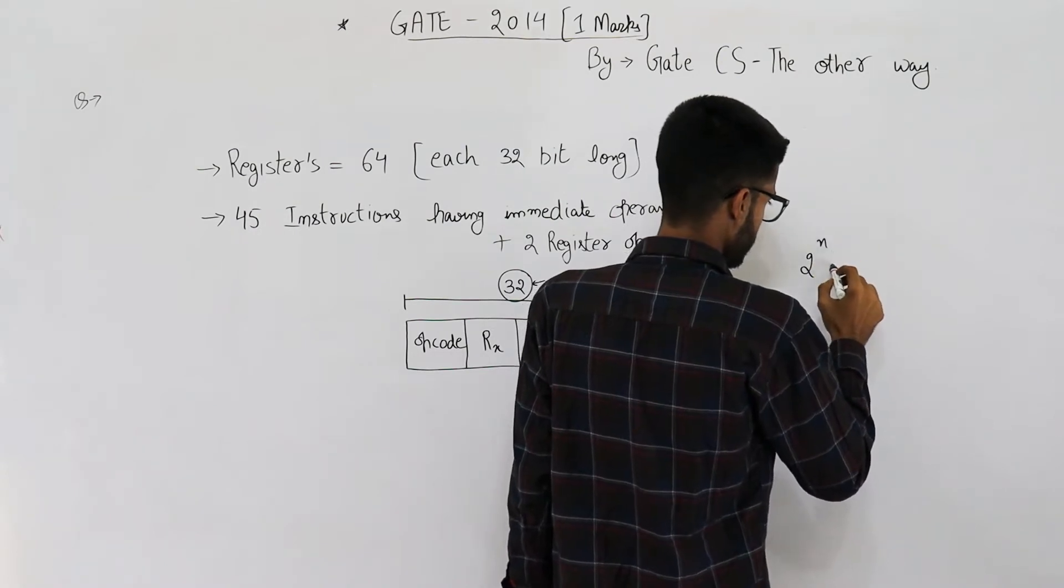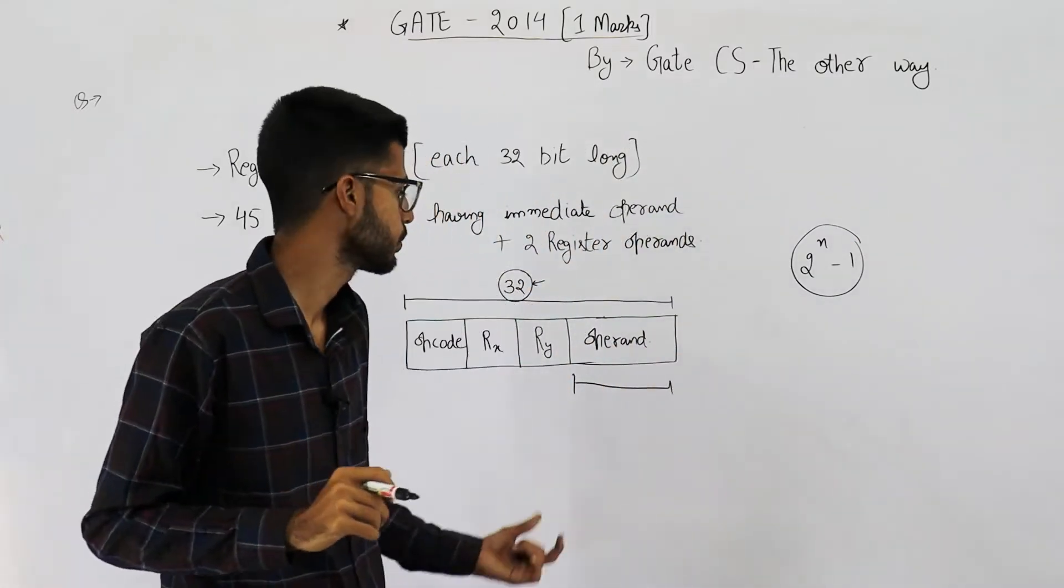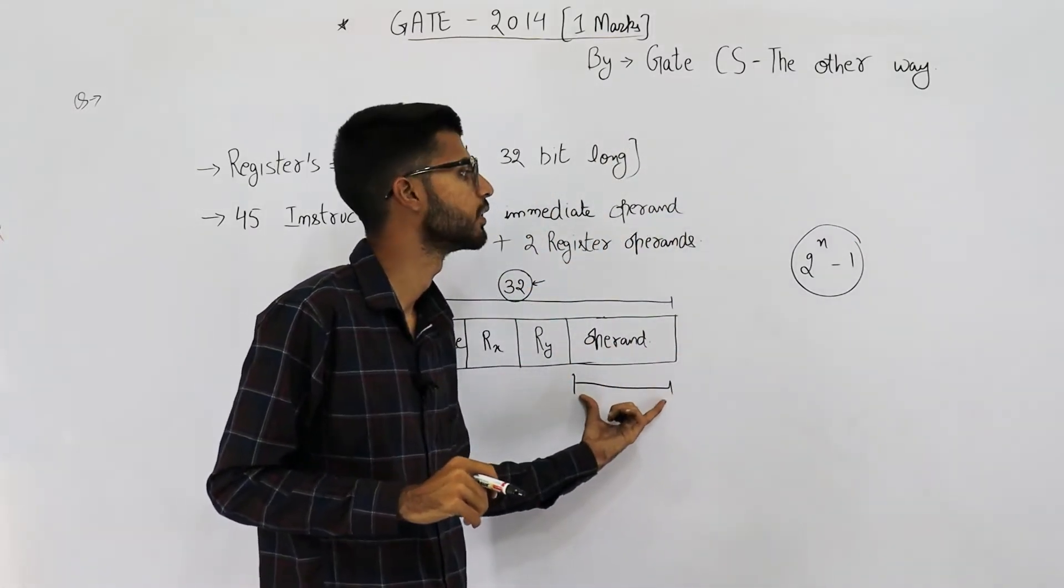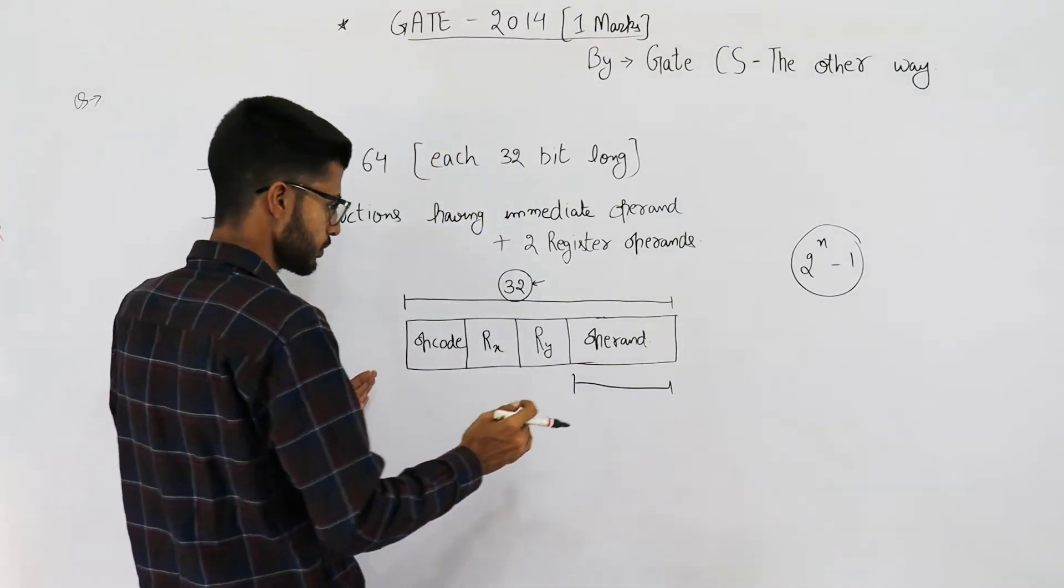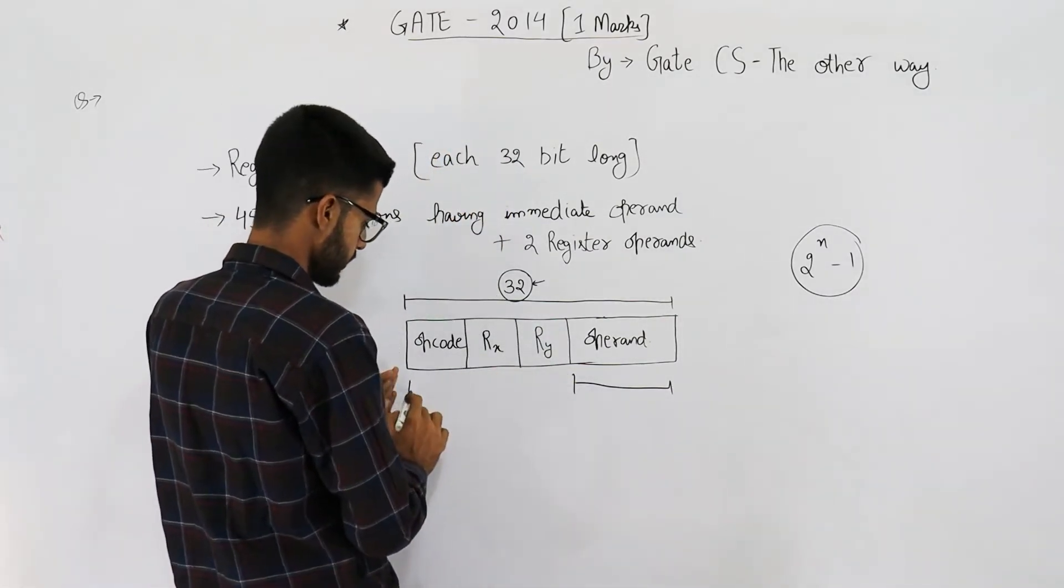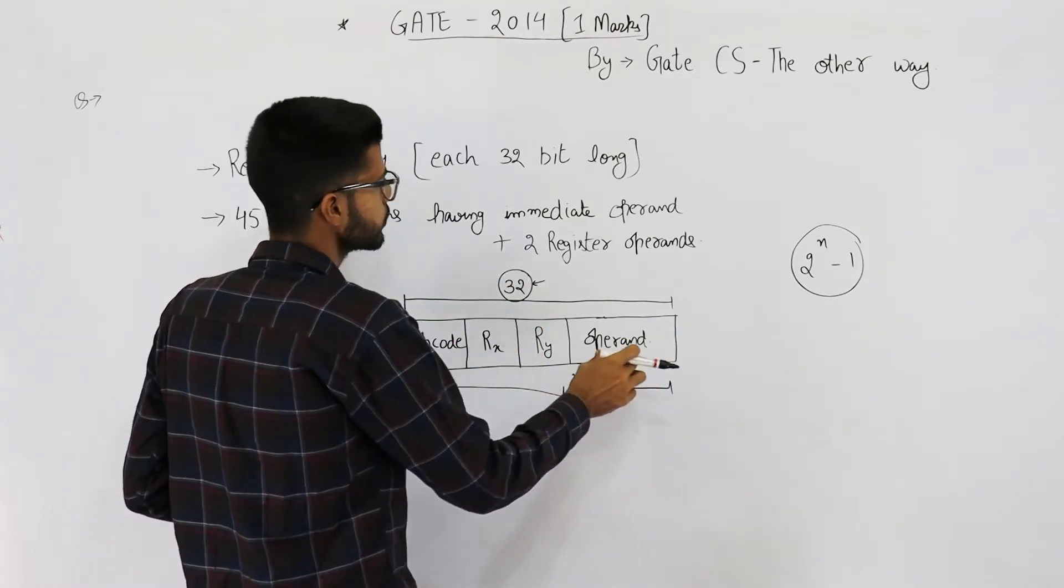That means if somehow we get to know how many bits this operand is, we'll get our answer. So for that, we need to subtract this part from 32, and we'll get to know these bits.